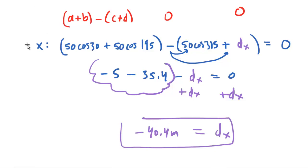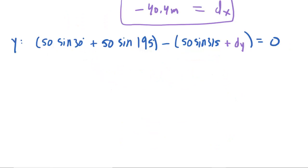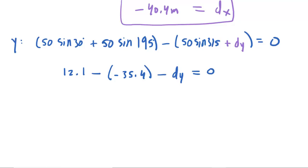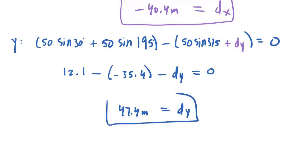We'll do something similar for the y-component, just changing cosines to sines. The setup for the y-component of vector D is the same structure with sines. The first group gives 12.1. Then distributing the minus sign — and be careful here because 50 sine of 315 is actually negative 35.4 — minus D sub y equals zero. Adding D sub y to the other side, the left-hand side becomes 47.4 meters. So we have the x-component as negative 40.4 and the y-component as 47.4 meters.